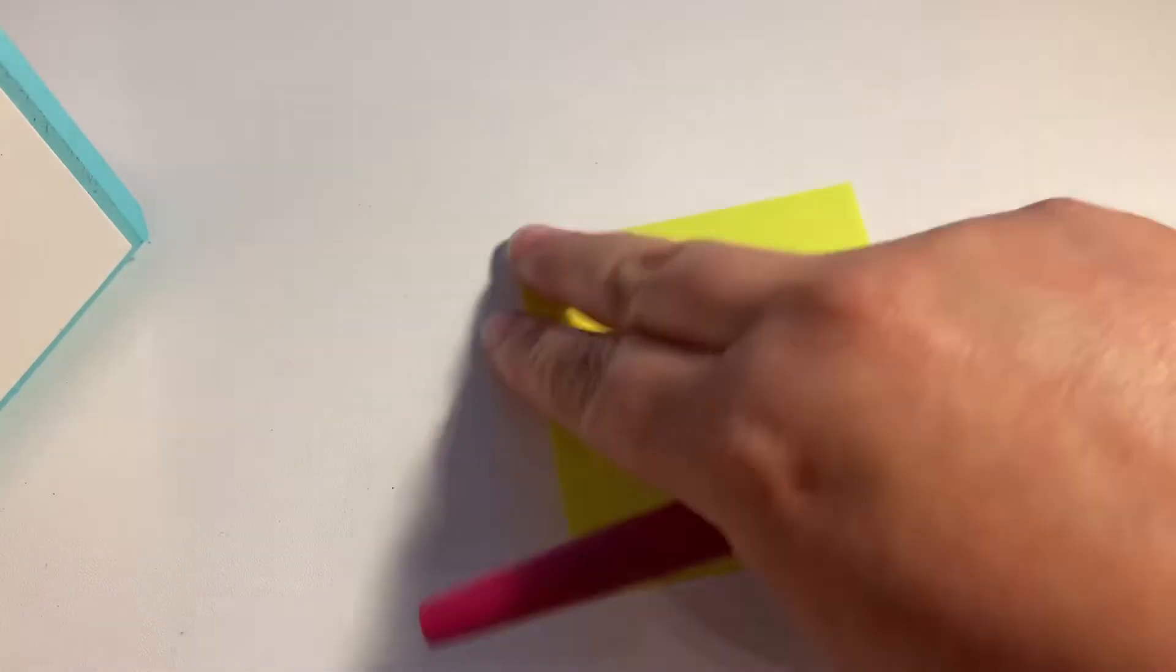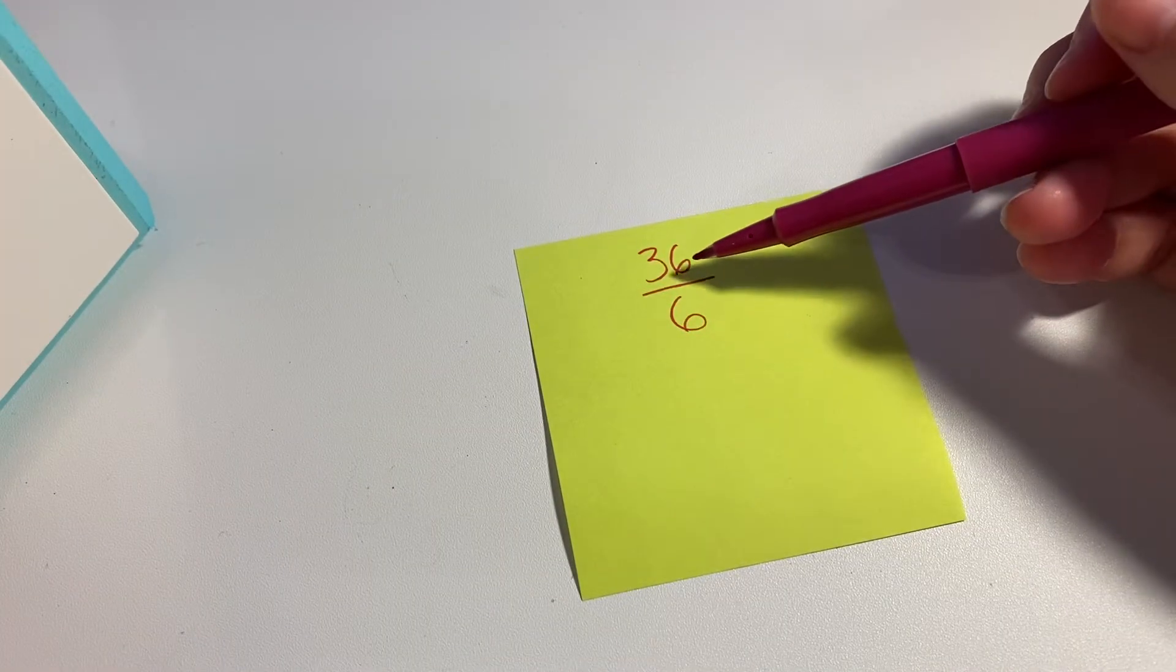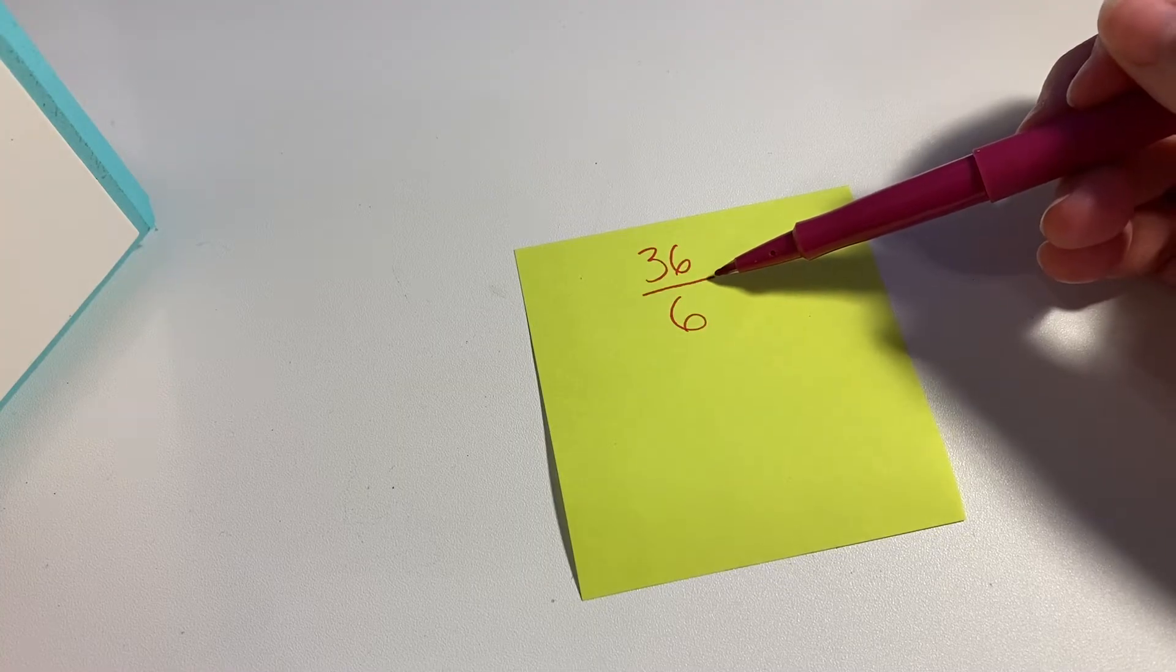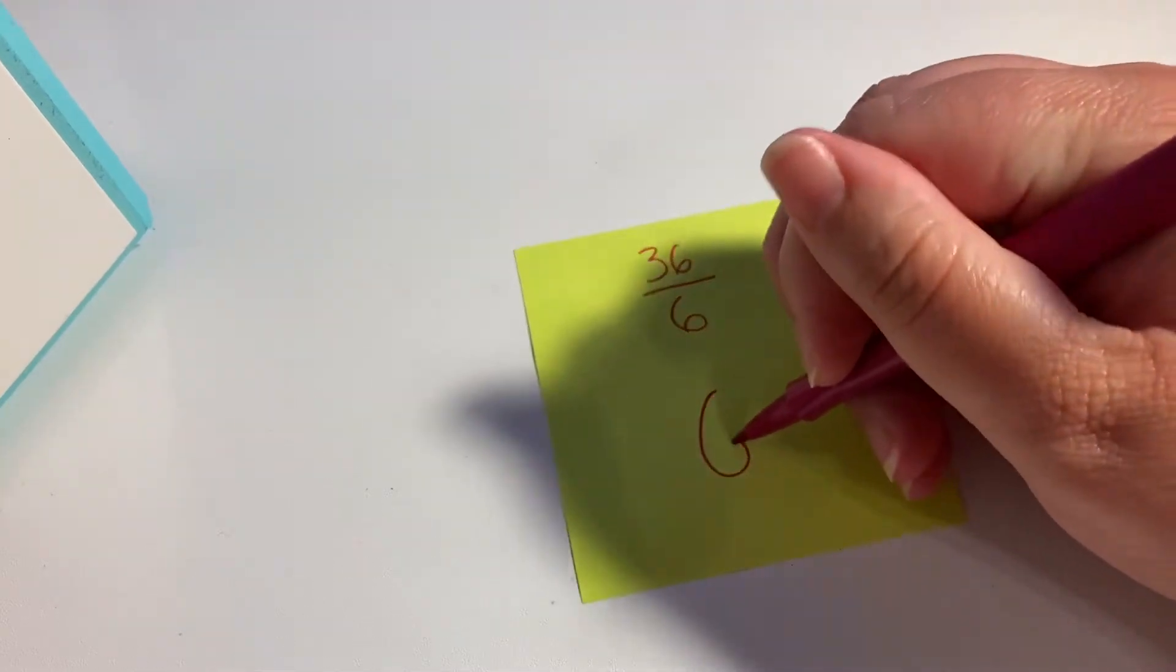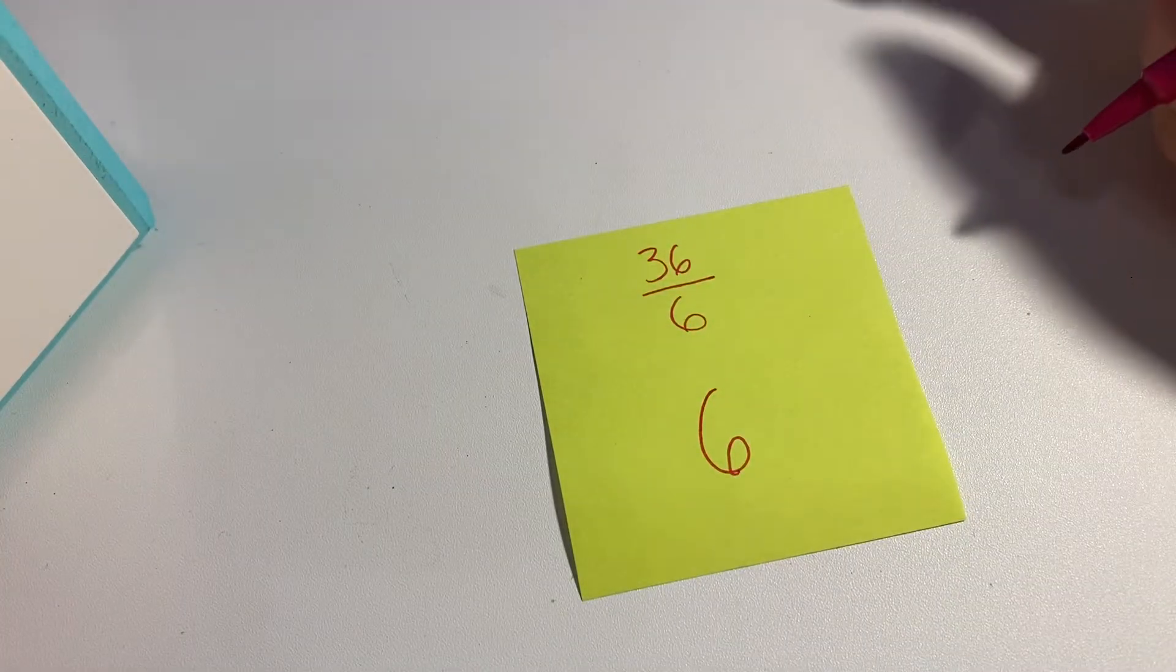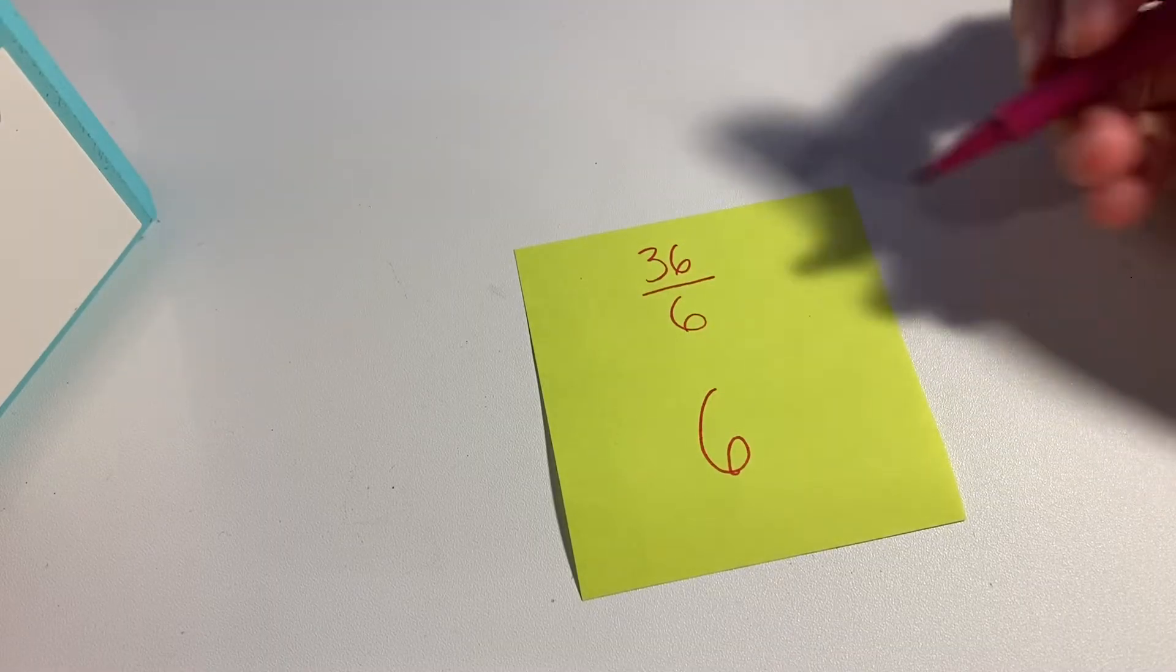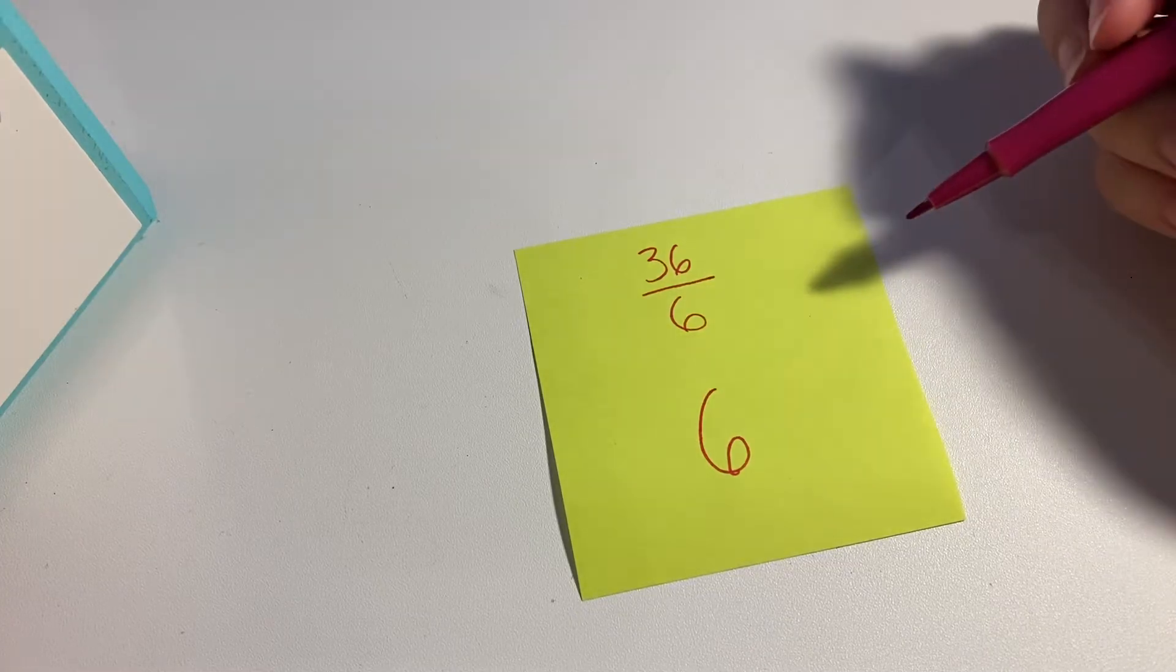So here would be an example. This is an improper fraction, and you'll notice that 36, this can be a division sign, divided by six equals six. So if you notice this, you don't really have to do a lot of work. You just have to know your math facts and your multiplication facts.